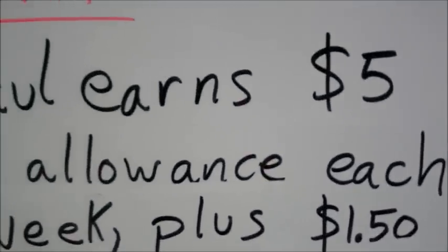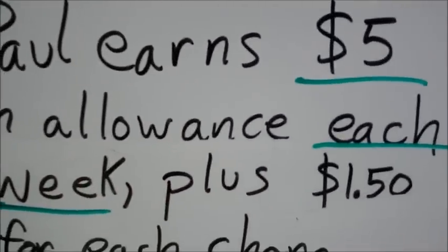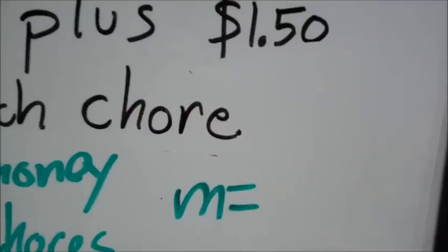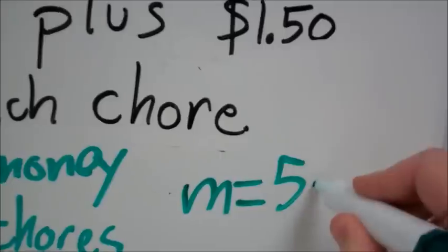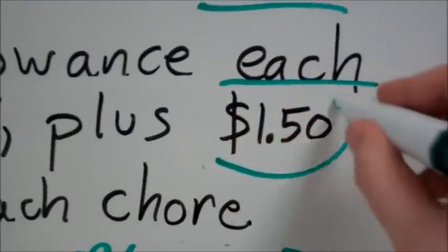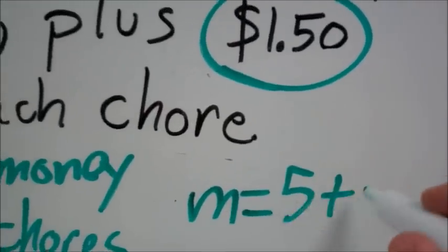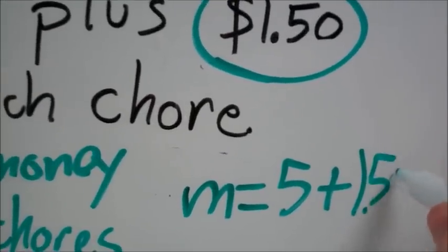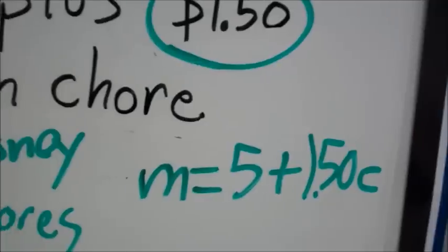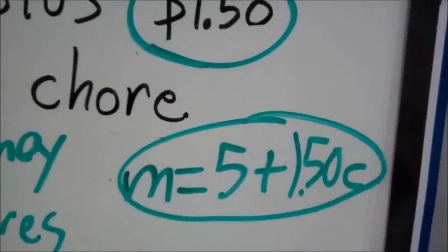Let's look back at our equation. He earns that $5 each week no matter what—he always gets $5. So we're going to have his money m equals $5 plus how much for each chore? $1.50 for each chore. So we're going to say this is m equals $5 plus $1.50 times c. So our final equation is m equals 5 plus 1.50c.